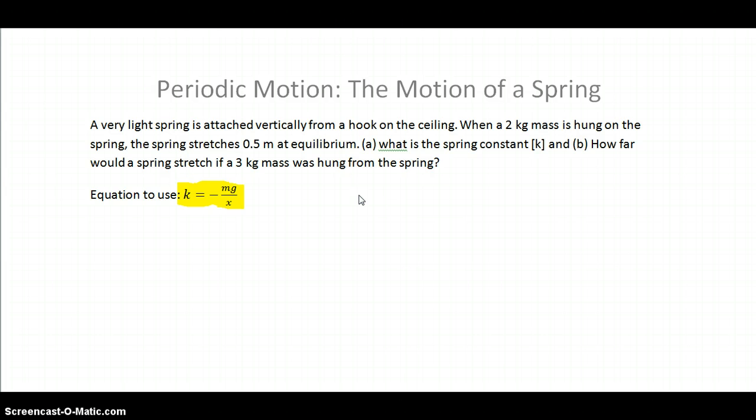The problem states a very light spring is attached vertically from a hook on the ceiling. When a 2 kg mass is hung on the spring, the spring stretches 0.5 meters at equilibrium. Part A asks what is the spring constant k, and part B asks how far would a spring stretch if a 3 kg mass was hung from the spring.